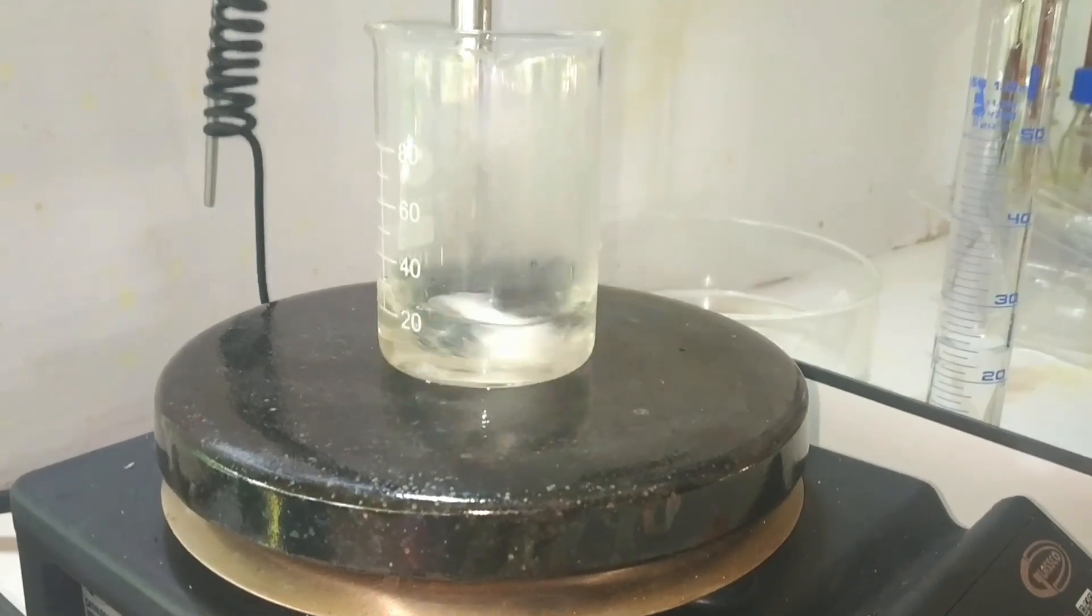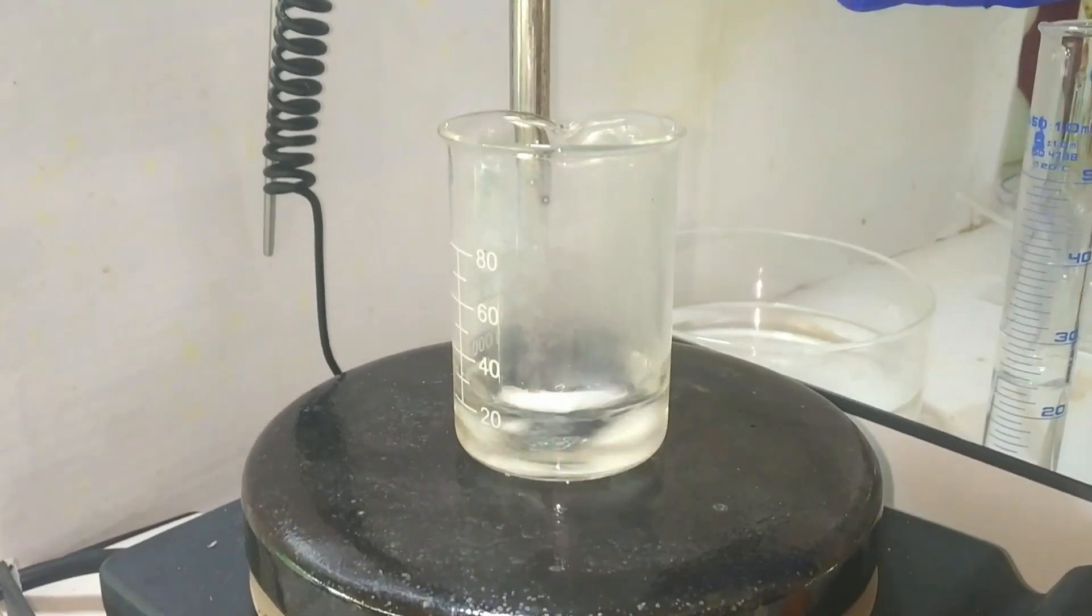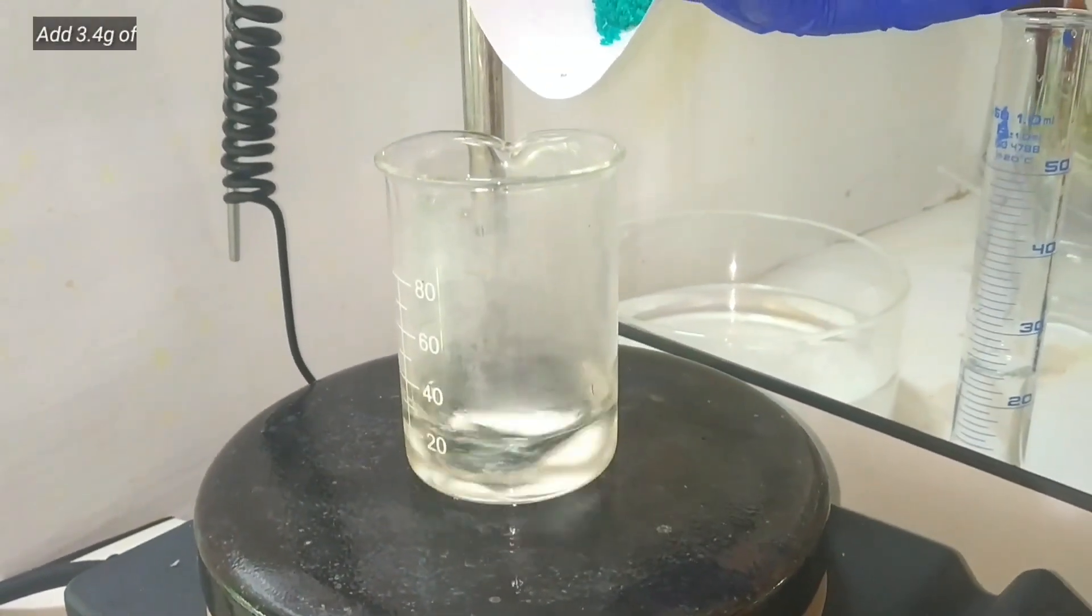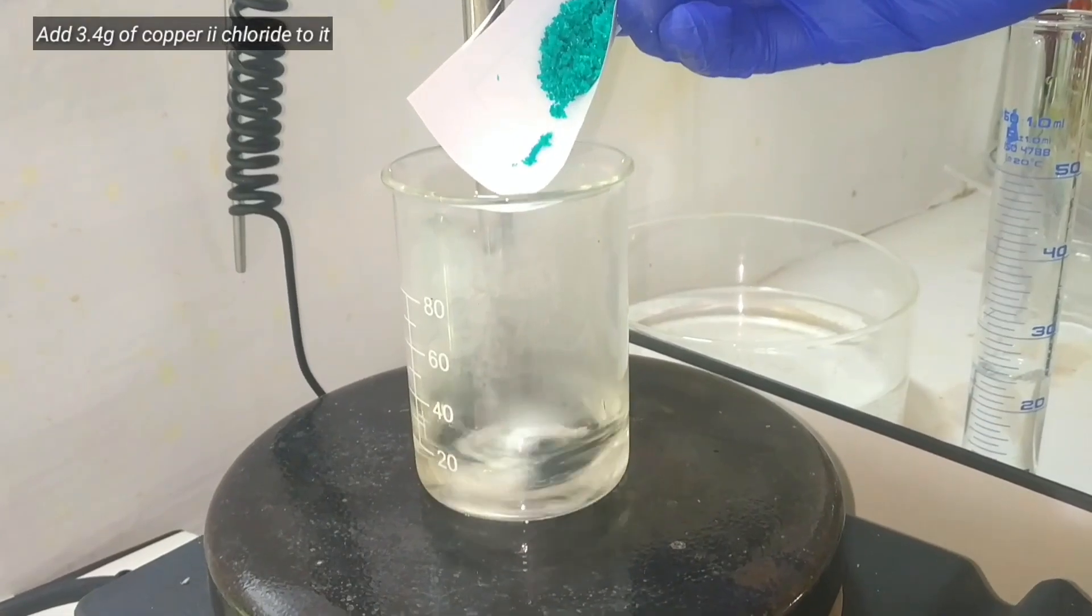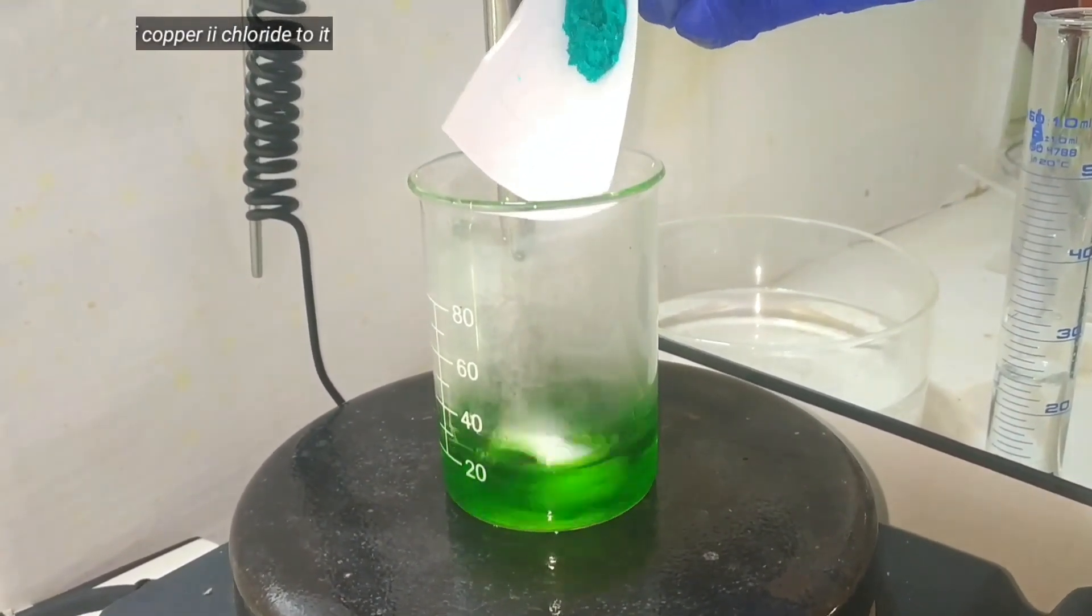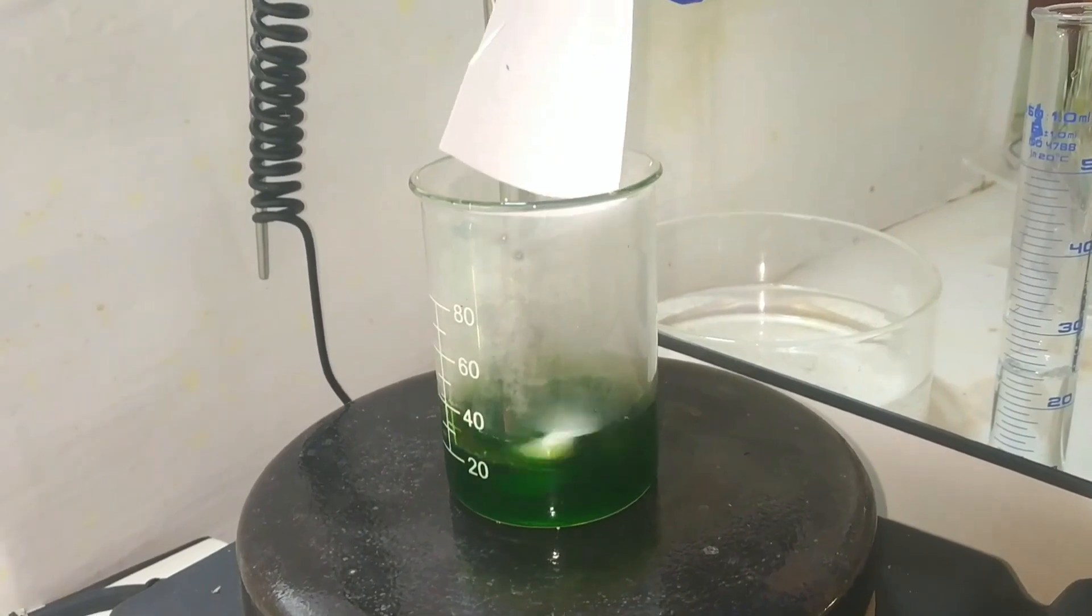Once you get a clear solution, add the pre-measured 3.4 grams of copper(II) chloride dihydrate to the solution with constant stirring. Copper(II) chloride has a green color.